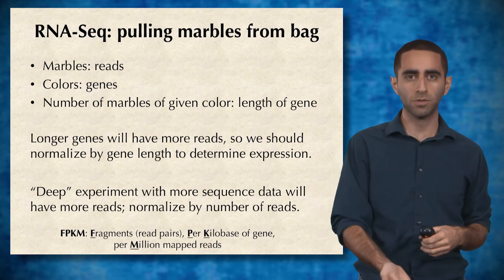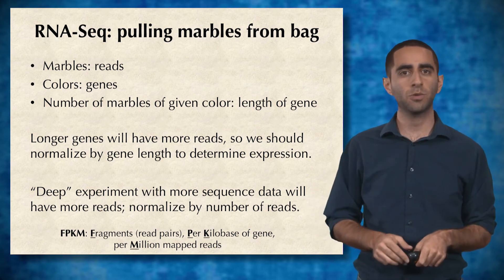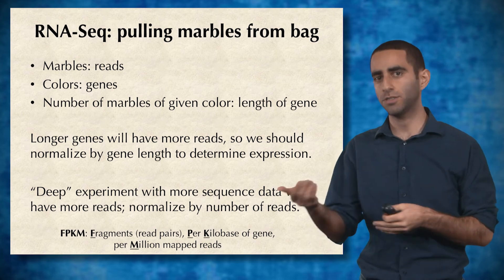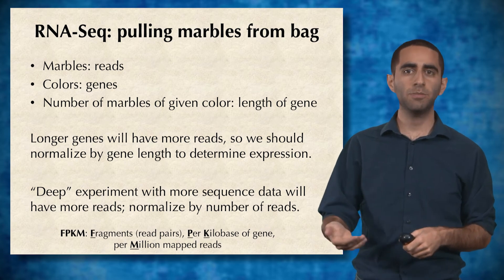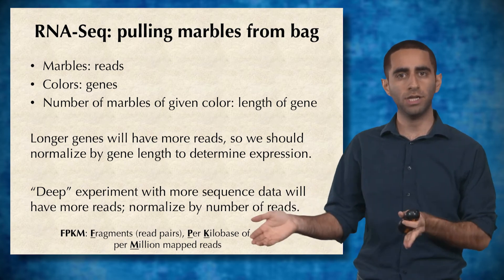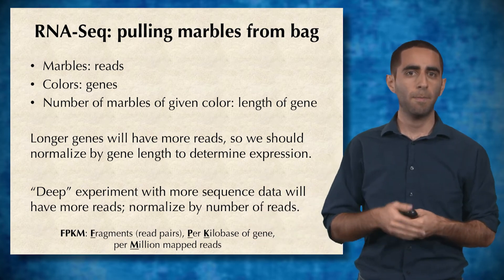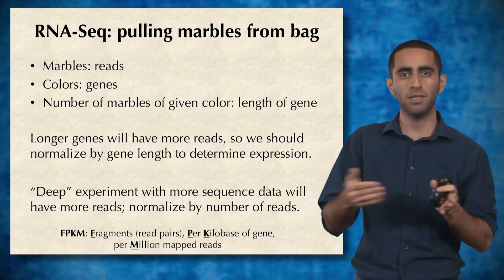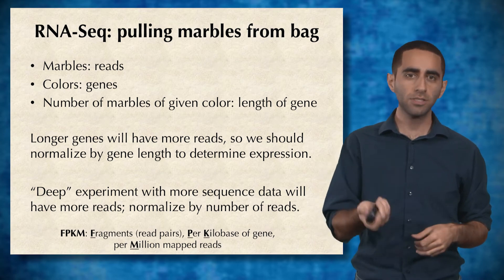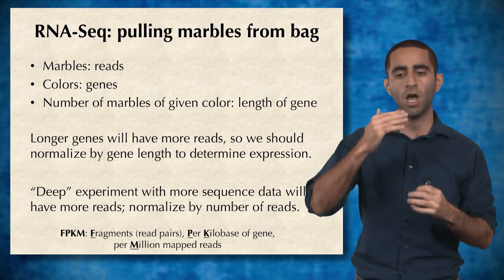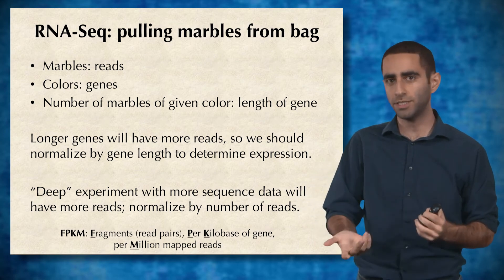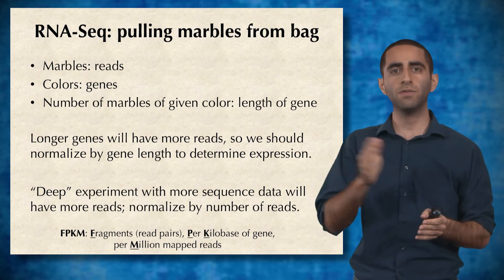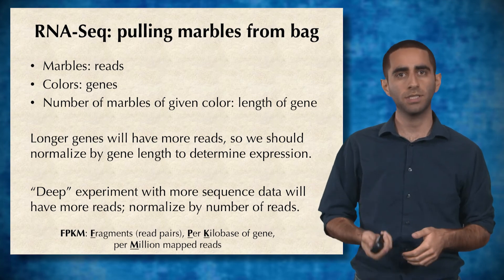Instead of raw read counts, our expression values are generally reported in terms of FPKM. This unit stands for Fragments Per Kilobase of gene length per Million mapped reads. Fragments are read pairs. So we normalize per kilobase of gene length and per million mapped reads. This normalized value lets us compare across different genes within the same sample — because we've normalized by gene length — as well as across two different samples, because we've normalized by sequencing depth.